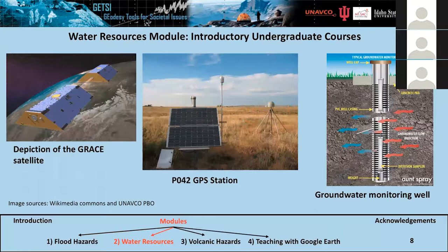The next module I worked on was the water resources module, which has a goal of combining three datasets to get students to measure water availability. These include GRACE — the Gravity Recovery and Climate Experiment — the vertical component of GPS from the Plate Boundary Observatory, and groundwater data from the USGS.